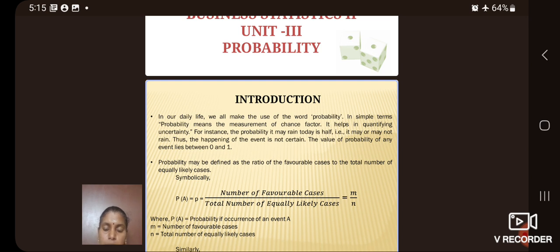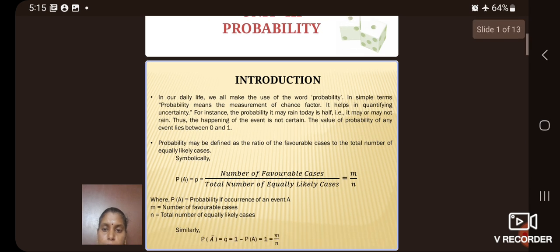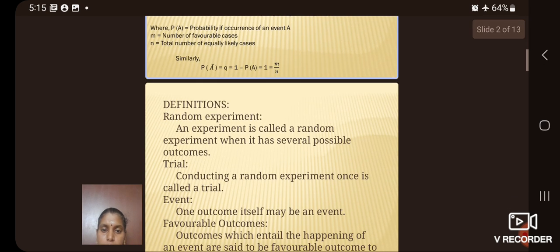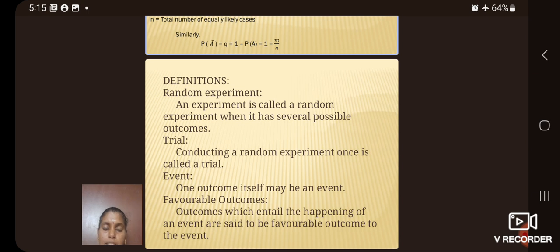The value of probability of any event lies between 0 and 1. Symbolically, we can represent this as P of A equal to number of favorable cases divided by total number of equally likely cases. That is equal to M by N.